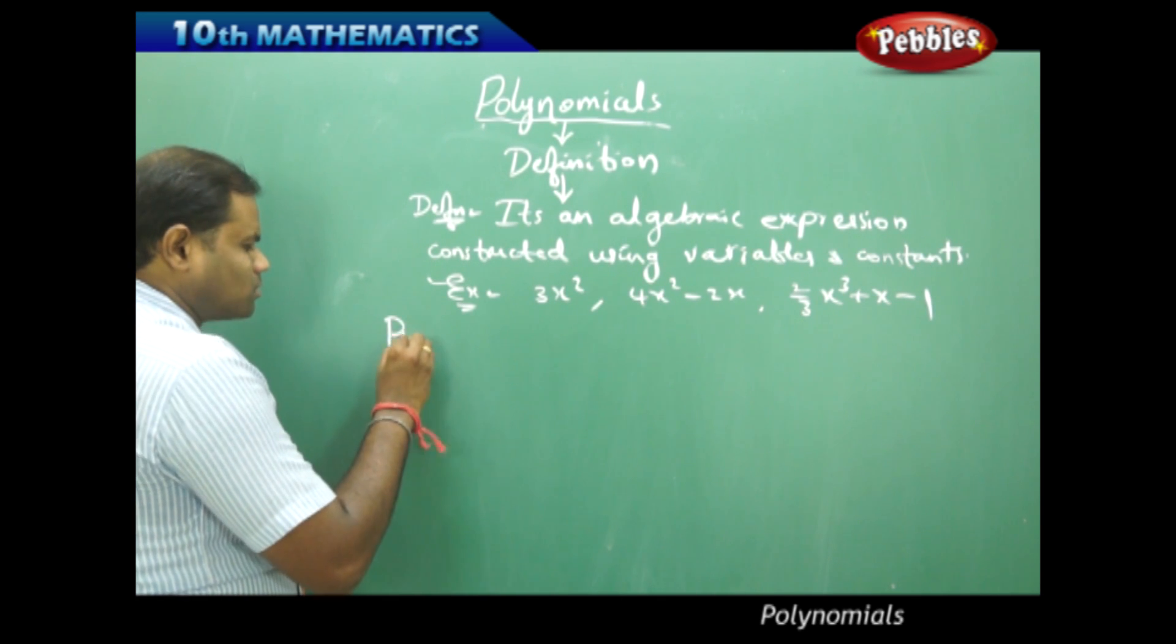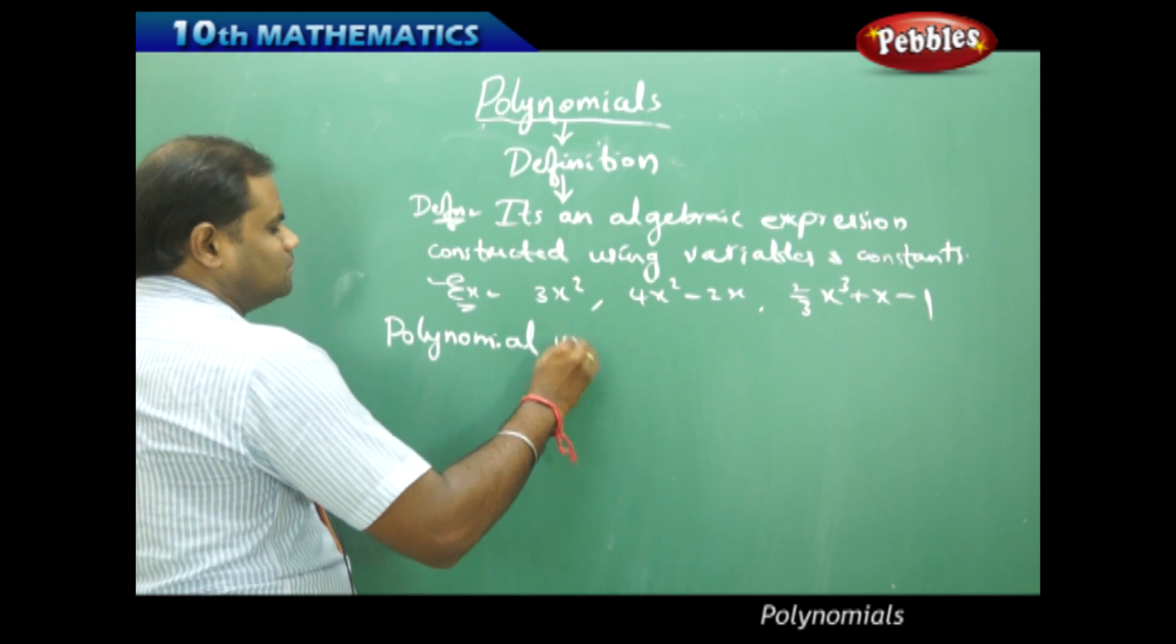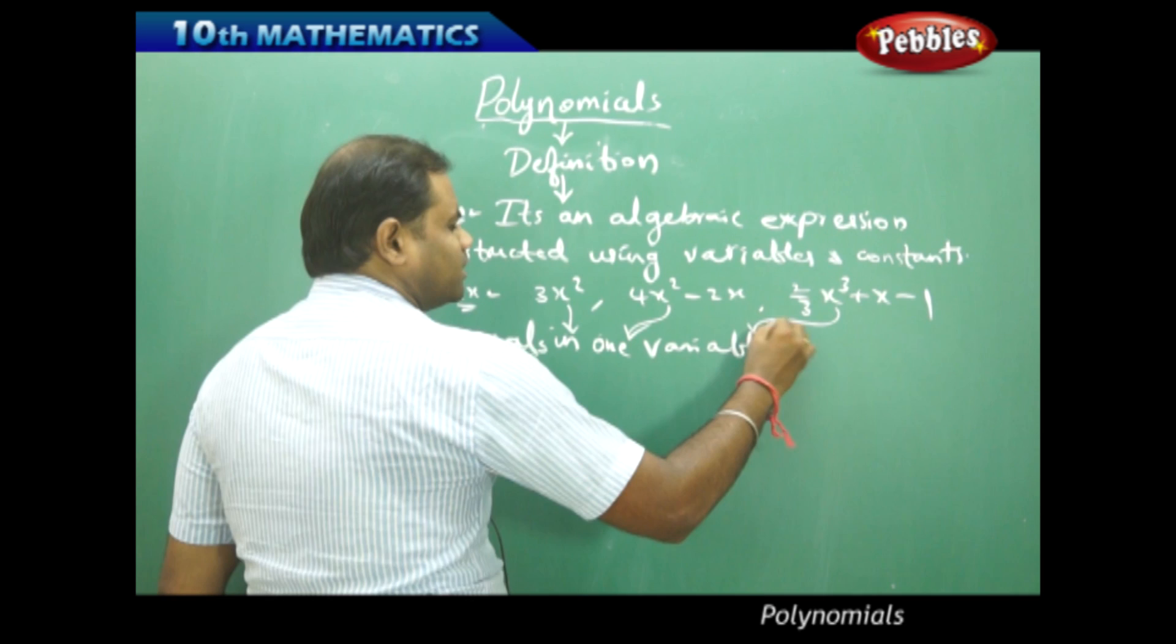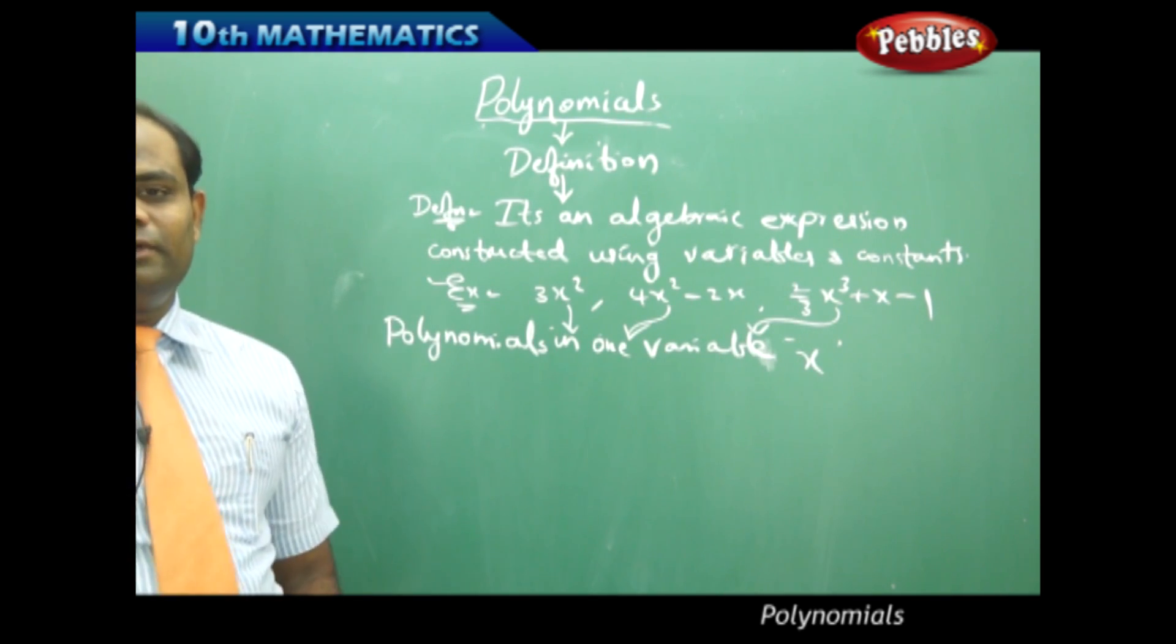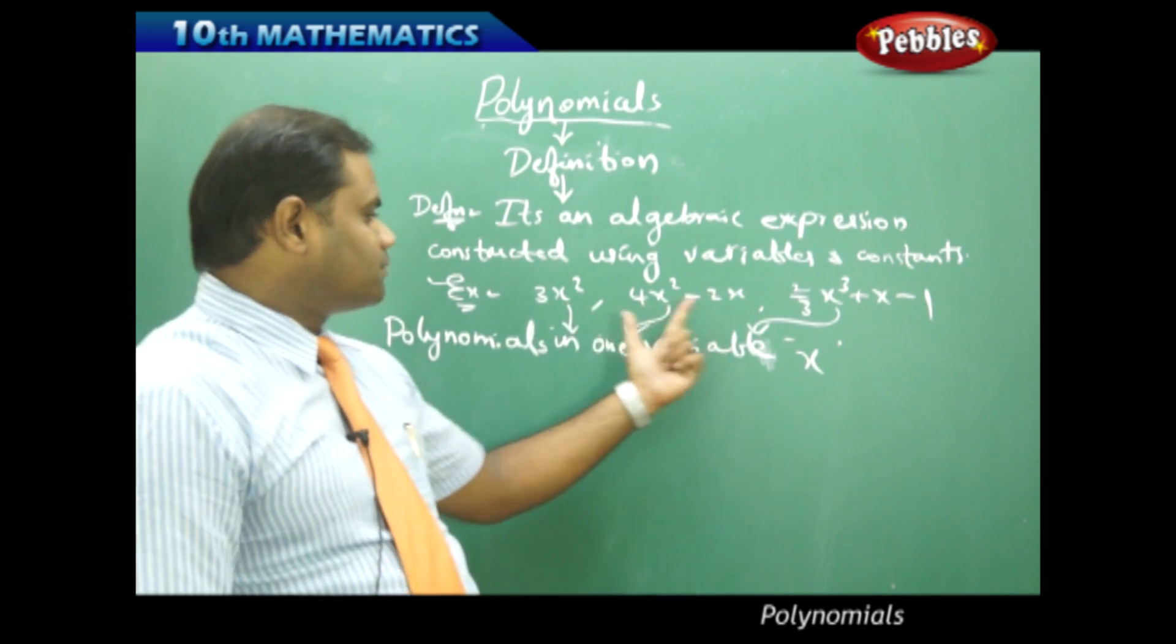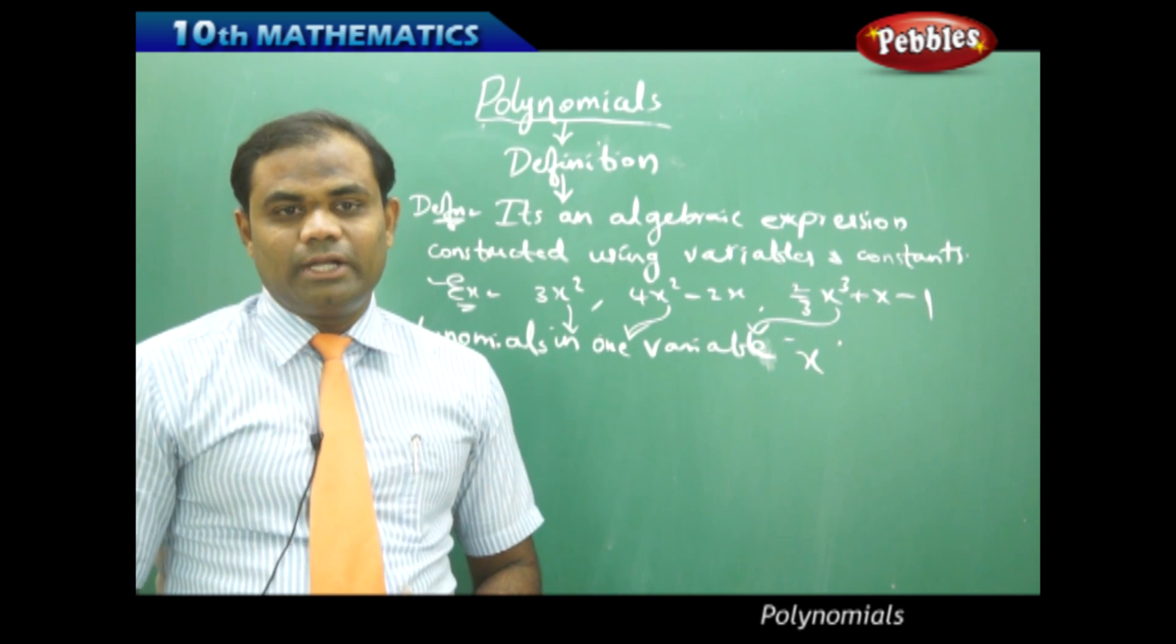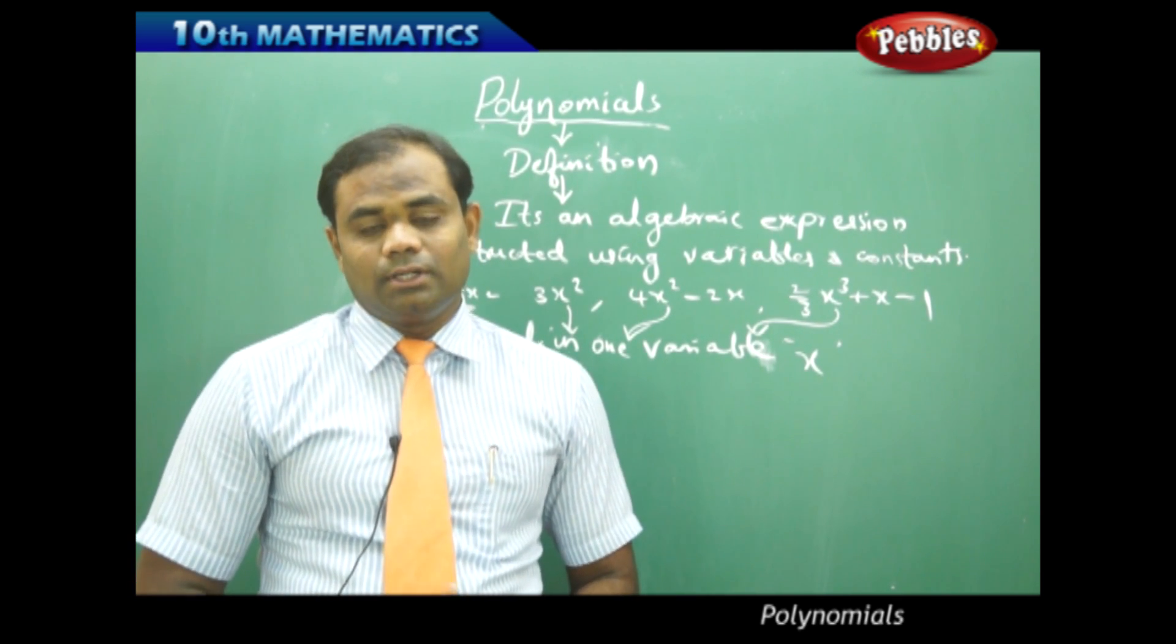When I discuss about polynomials in one variable, these are all the polynomials in one variable that is x. We call these polynomials in one variable x because you identify only one unknown that is x which is the variable. So polynomials in one variable x are generally in this form. Let's see how we define a polynomial in single variable x in its general form.